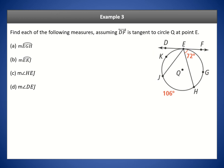For the next example, DF is tangent to circle Q at point E. We want to find arc EGH. We know the angle between the chord and its tangent line is 72 degrees, so we double it to get the arc — 72 times 2 is 144. So arc EGH is 144 degrees, by theorem 10.9.